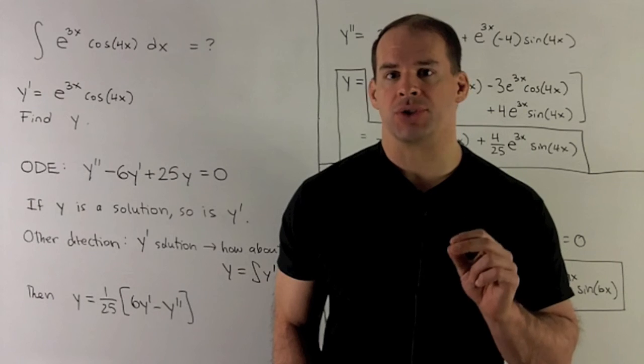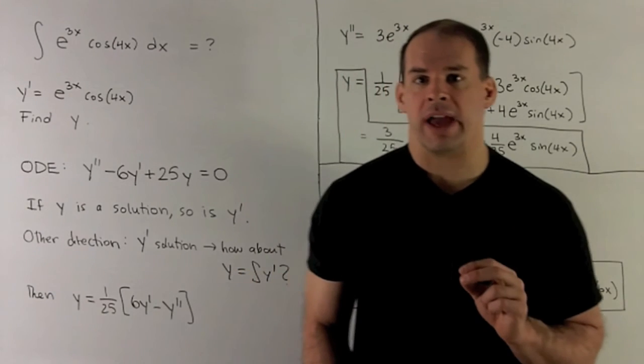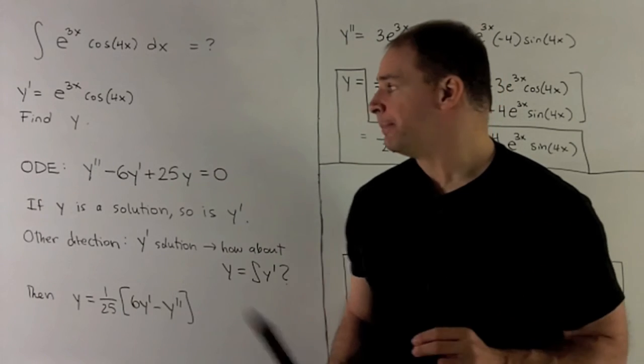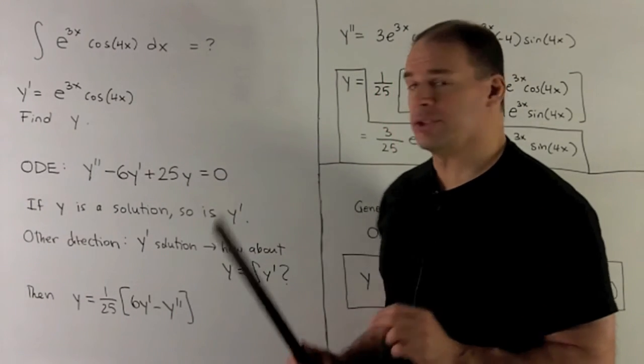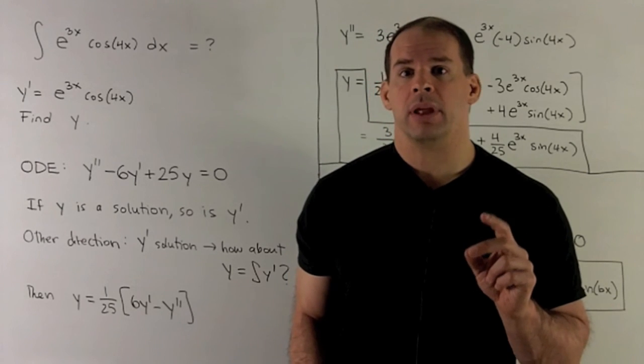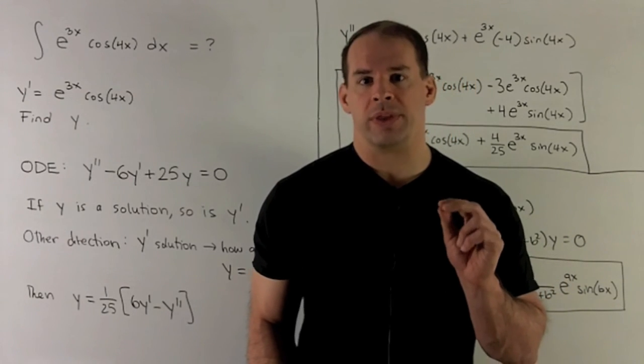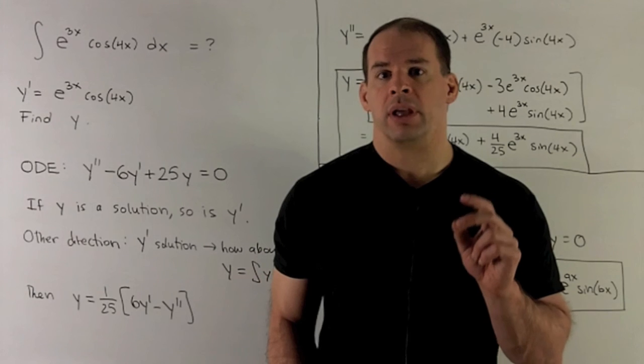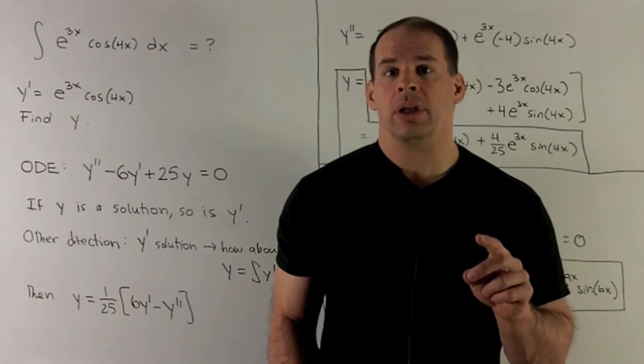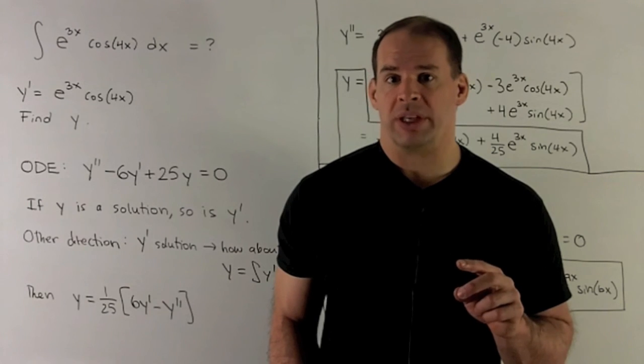Now, let's also note e to the 3x cosine 4x also satisfies the ODE given here. So that you can just check. Now, let's look at something special with this ODE. If I have a solution to this ODE, we note its derivative will also be a solution.